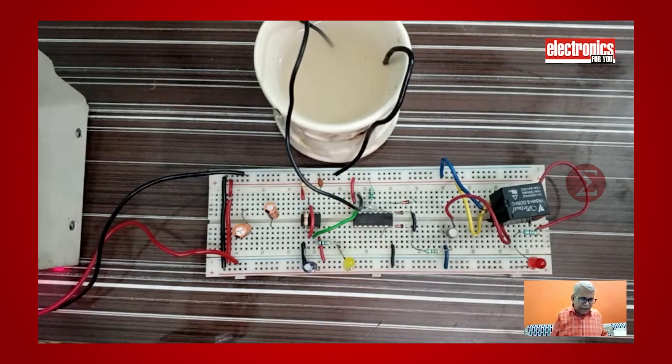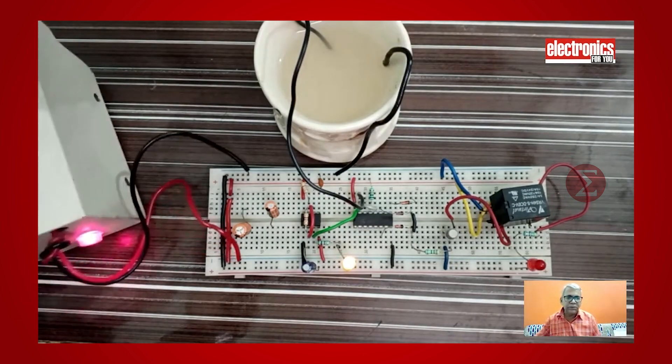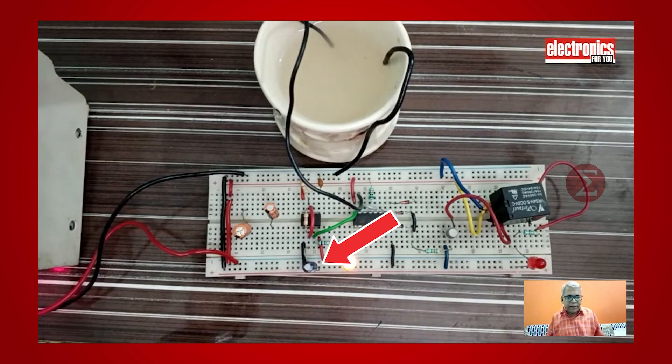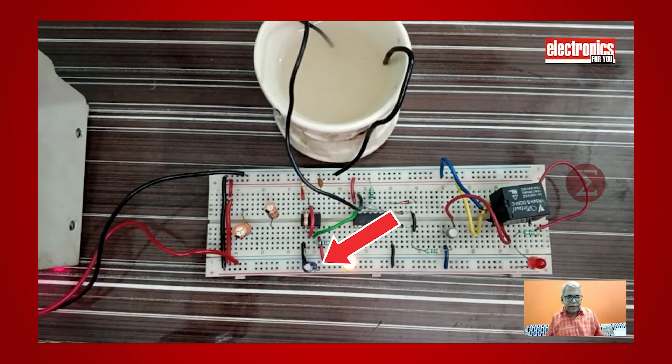This is our prototype. For installing it to the cooler, put this water sensor into the water tank and connect this side with the cooler pump in place of this relay. After installing the circuit, provide a power supply to it. Here we have used a low value capacitor in our prototype. You have to use the same value capacitor provided in the circuit diagram while installing the circuit to your cooler.